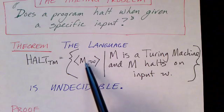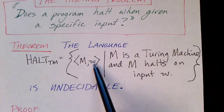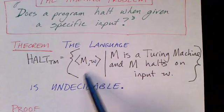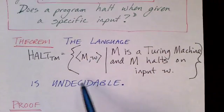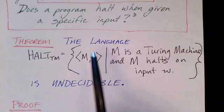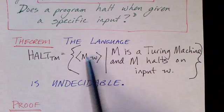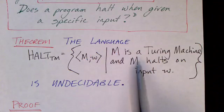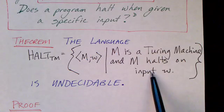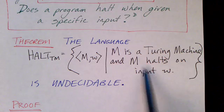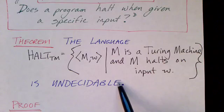In other words, given a Turing machine and a string, it's undecidable. We can't determine whether yes, the Turing machine would halt when applied to that input, or no, whether the Turing machine would loop. We cannot decide that.